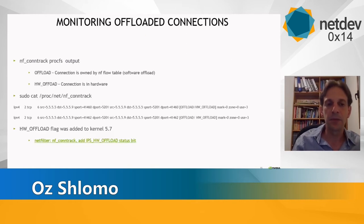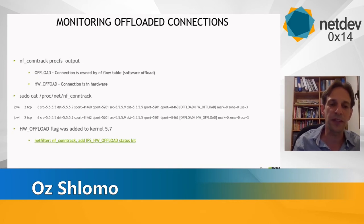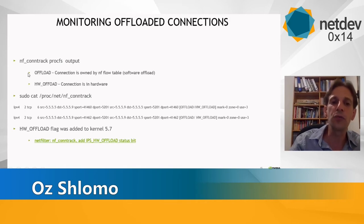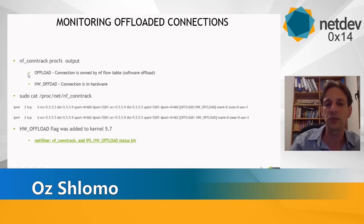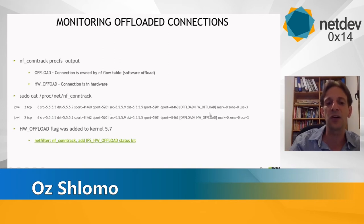We also enhanced monitoring capabilities, letting users know if a connection is offloaded or not. We extended the NF conntrack ProcFS, which already had an offload flag indicating a connection is owned by NF flow table. We also added a hardware offload flag indicating the connection is now in hardware. This flag was introduced in kernel 5.7.